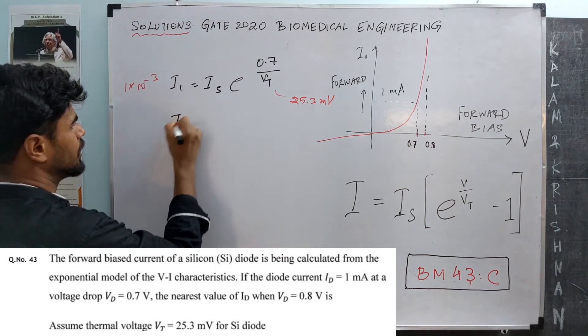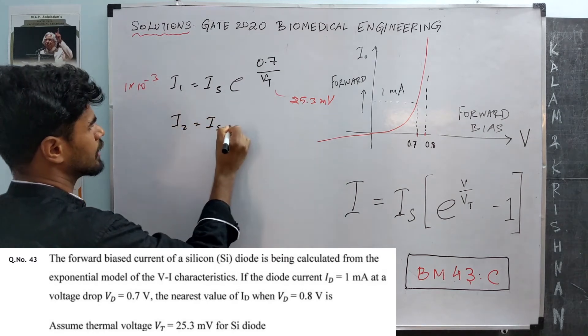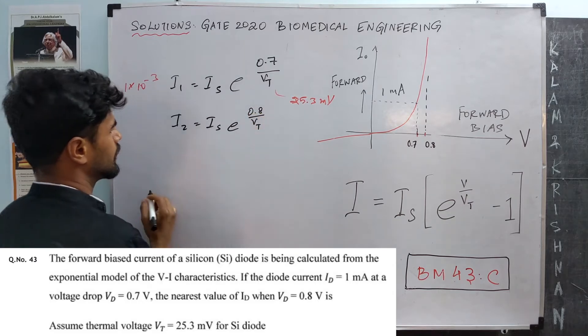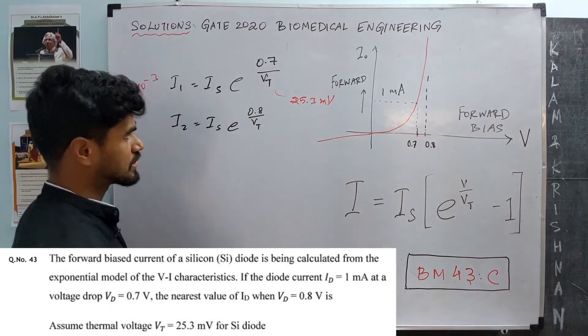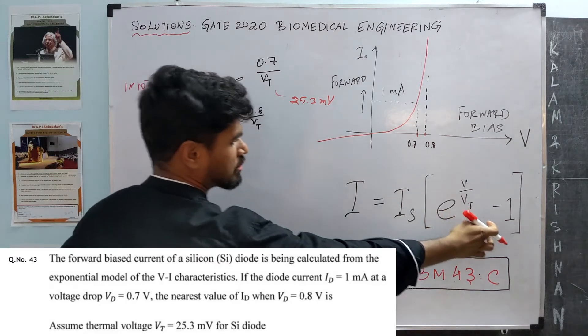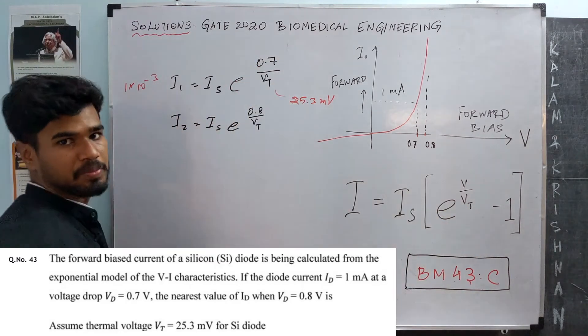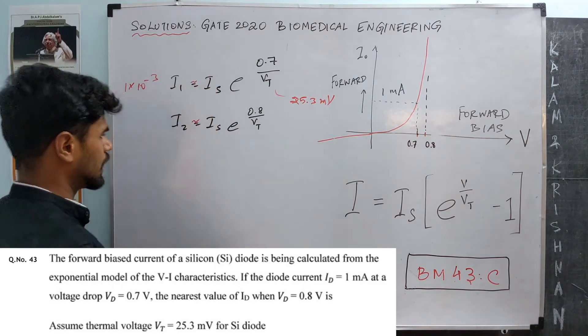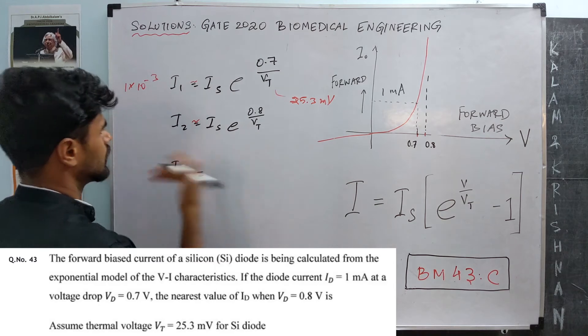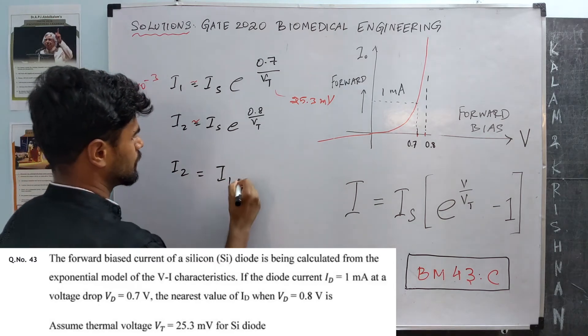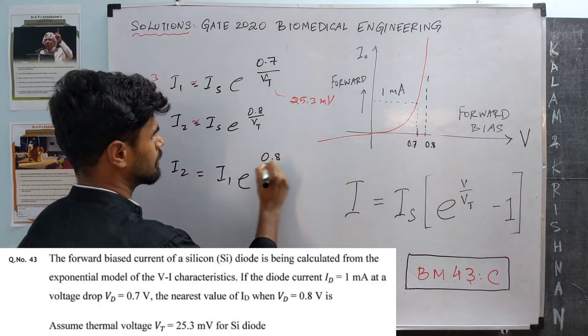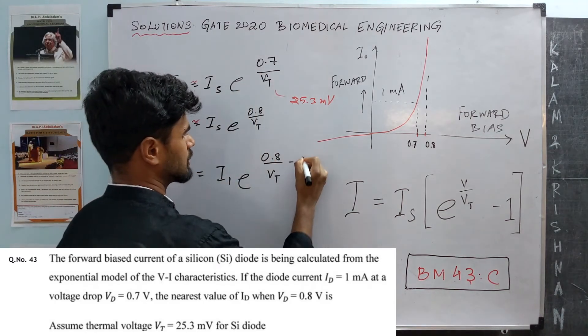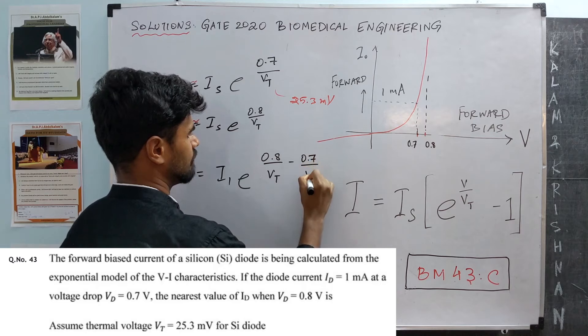Now I2 is Is times e power 0.8 by VT. Notice I have neglected the one because that term is very small compared to the exponential term. This is approximate, and I2 is I1 times e power 0.8 by VT divided by this expression, which gives you minus 0.7 by VT.